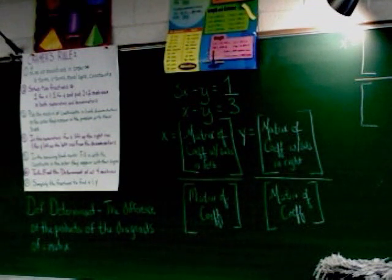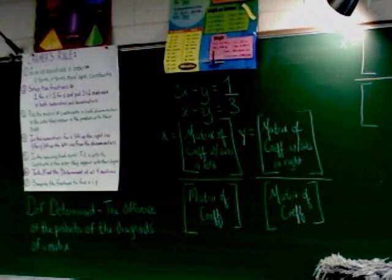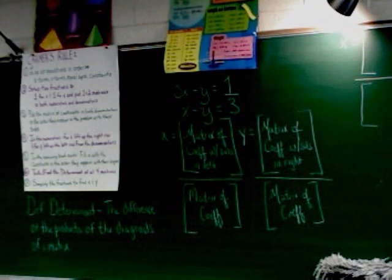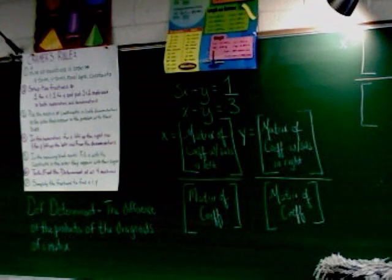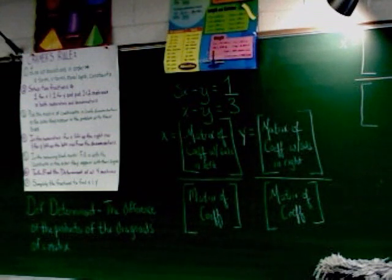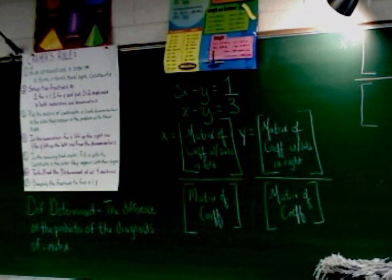Step one says to line up the equations in order: the x terms, then the y terms, then the equal signs, then the constants. As you can see with all the examples on the board, they're already in that order. Step two says to set up two fractions, one for x and one for y, and put two-by-two matrices in both numerators and denominators. That's already been done as well — you can see matrices set up with fractions.